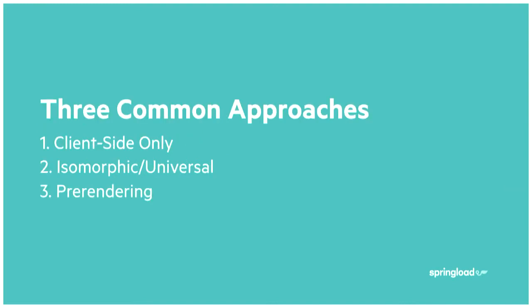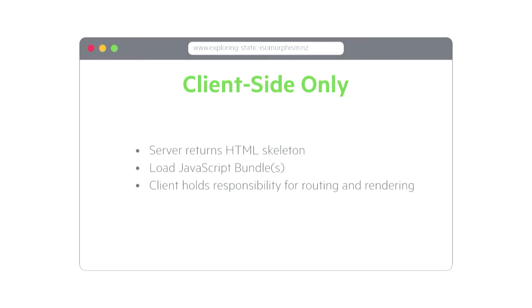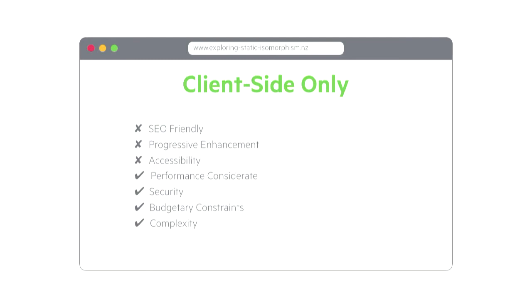Going back to the three approaches: client-side only, isomorphic/universal, and one called pre-rendering. With client-side only, we get an empty skeleton from the server; it loads the JavaScript and the client holds full responsibility for routing and rendering. Comparing to our criteria: it's not SEO friendly, difficult to progressively enhance since there's no HTML on the page — if JavaScript is disabled, they get nothing. The same goes for accessibility. It's pretty good for performance since we're getting a static HTML file returned from the server, there's a small attack surface for security, it's cheap and efficient to run, and it's simple.